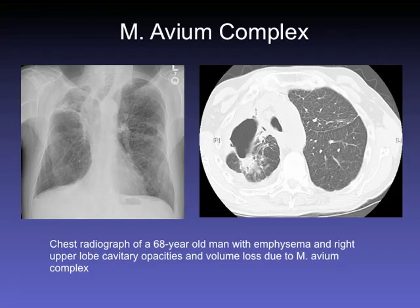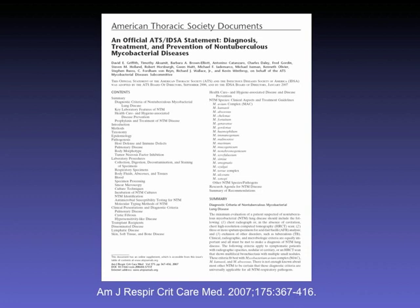A mycobacterium avium complex infection showing a humongous cavity is fibrocavitary disease — these are difficult to treat. The last clinical guidelines for treatment of NTM diseases were published in 2007, so as of 2013 they're six years old and perhaps need updating. If you want to work up a suspected mycobacterial infection, you do three AFBs. If they're smear positive and the patient has TB risk factors, you'd probably start them on treatment for TB.